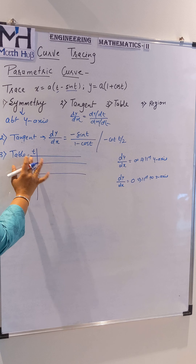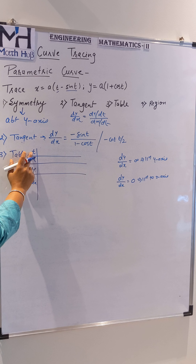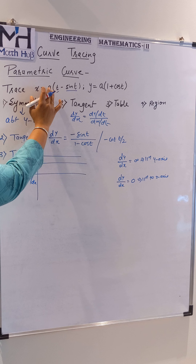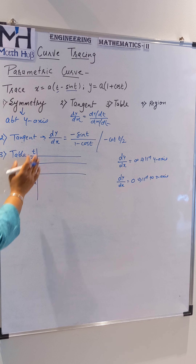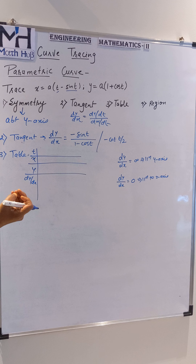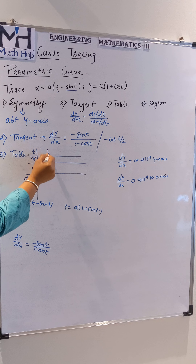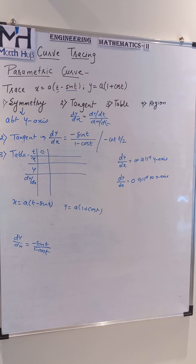For the third step, we build a table. We substitute values of t and find the corresponding values of x, y, and dy/dx. Since x and y are functions of t, we cannot substitute x and y values directly — we must substitute t values. When the equation contains trigonometric functions, the easiest values to take are t = 0, π, and 2π.